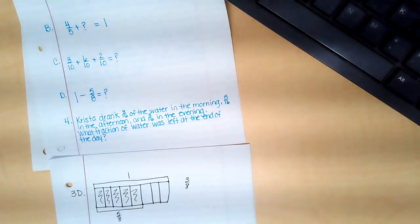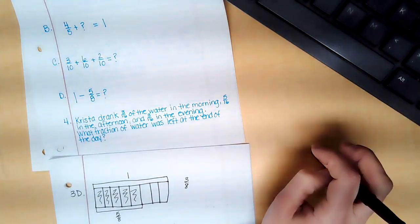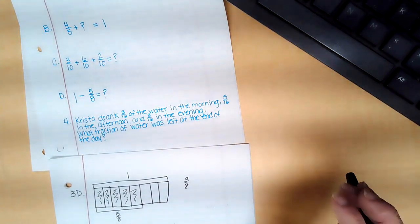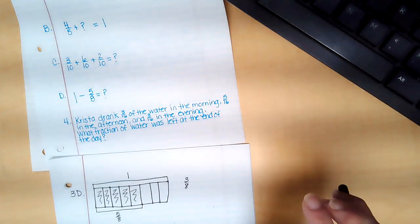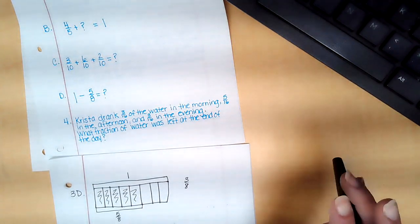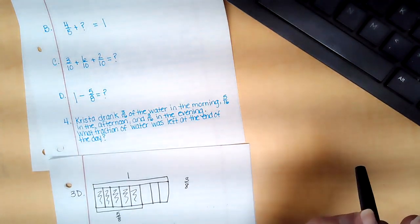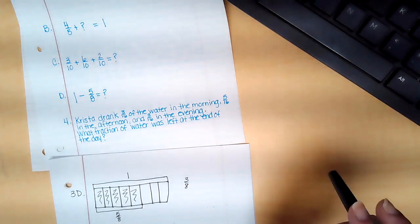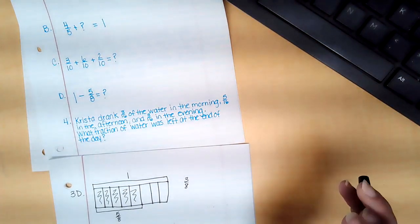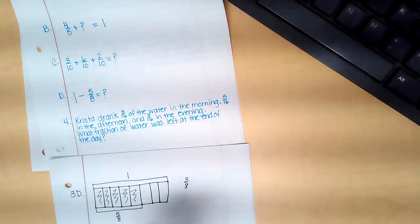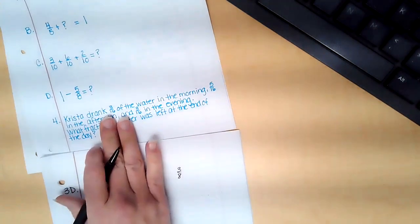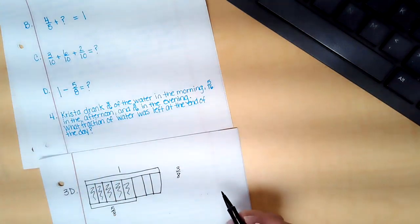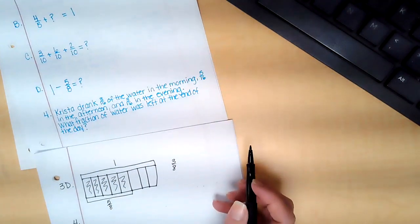Okay, so let's look at the next one. This one says Crystal drank three sixteenths of the water in the morning, five sixteenths in the afternoon, and three sixteenths in the evening. What fraction of water was left at the end of the day? So on this one I could do a few things. I could draw a model and make it sixteenths if I wanted to.